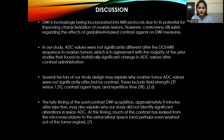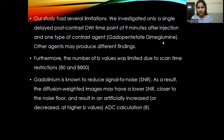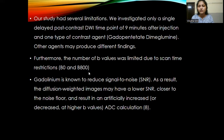There are some limitations to my study. We investigated only a single delayed post-contrast dynamic imaging time point at 9 minutes after injection. Only one type of contrast agent was used, that is gadopentetate dimeglumine; other agents may produce different findings. The number of B values was limited due to scan time restrictions, and only B0 and B800 diffusion-weighted values were included. Additionally, gadolinium is known to reduce the signal-to-noise ratio, meaning DWI images may have a lower SNR, potentially resulting in artificially increased or decreased ADC values.